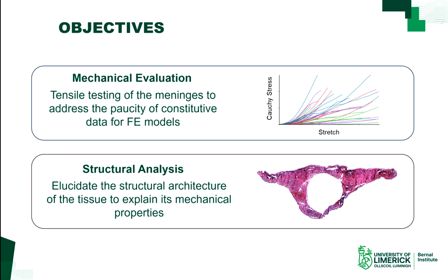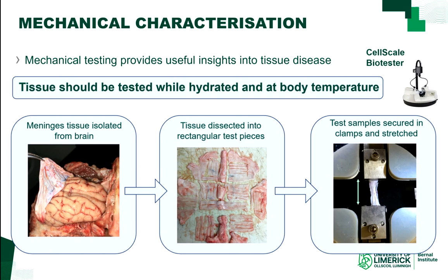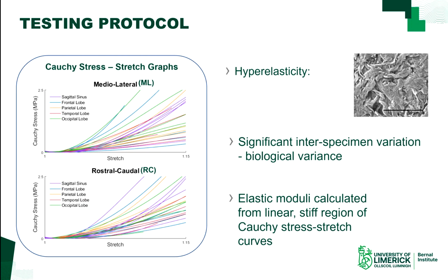This study's objectives are to mechanically characterize each component of the meninges, which includes the dura mater, the superior sagittal sinus, and the falx cerebri, as well as to structurally analyze it. From the Dublin Brain Bank at Beaumont Hospital in Dublin, Ireland, we isolated dura mater, falx cerebri, and superior sagittal sinus tissues and characterized them using uniaxial and biaxial tensile testing incorporating DIC. For this particular study you are seeing the biaxial data, carried out in both the medial-lateral and anterior-posterior directions.